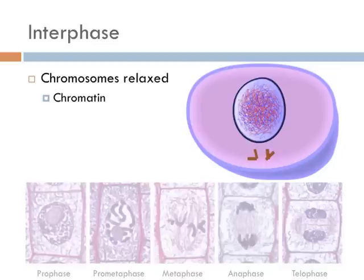Remember, interphase is the phase where cells grow and the chromosomes are relaxed. When the chromosomes are relaxed like this, they're known as chromatin, and they sort of resemble spaghetti in a bowl.